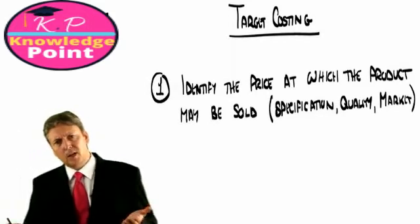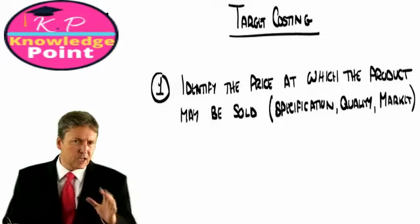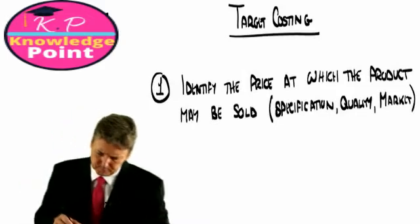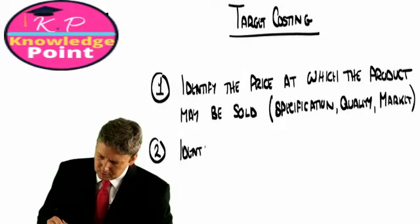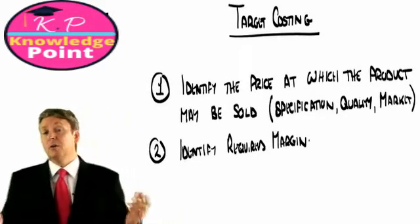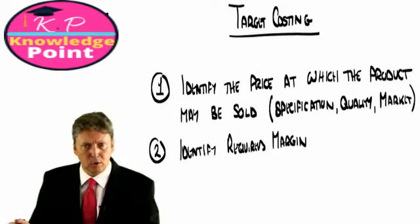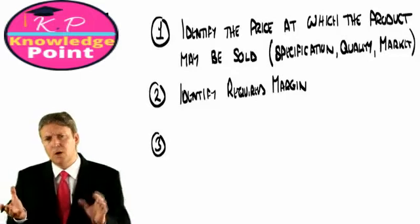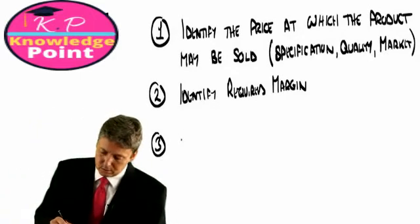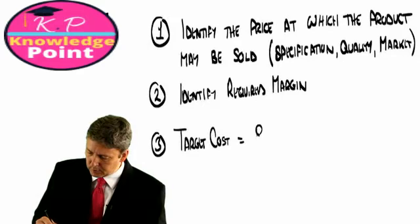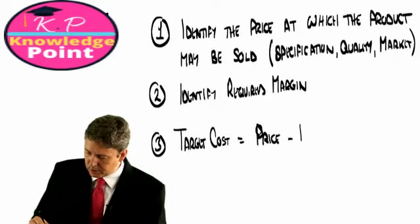So once we've established this price, we can then go one step back. The next step is to say, well, hold on a moment. If this is the price, how much margin or return do we want? So we identify the required margin. I suppose we're talking about profit margin here, although it could be a cash flow measure or any measure that the examiner would want. And then step three, once we've got our margin and we already know our price, we can establish our target cost. The target cost is simply going to equal the price minus the required margin.